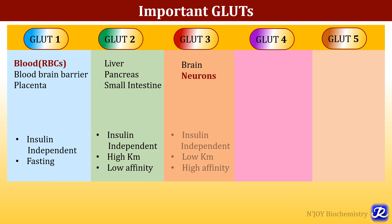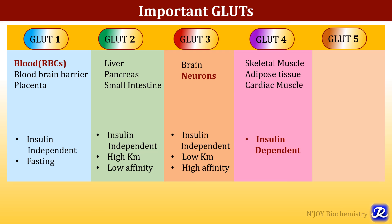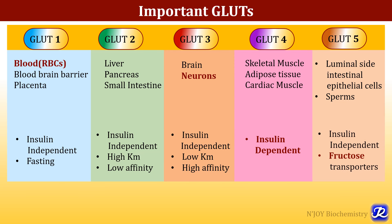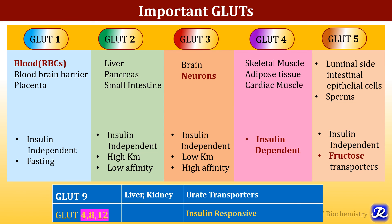GLUT 3 is in brain neurons, insulin independent, with low KM and high affinity — responsible for glucose uptake during fasting. GLUT 4 is in skeletal muscle, adipose tissue, and cardiac muscle — insulin dependent, requiring insulin for recruitment from the intracellular site to the cell surface for glucose uptake. GLUT 5 is on the luminal side of intestinal epithelial cells and sperm, insulin independent, and exclusively transports fructose. GLUT 9 is located in the liver and kidney and is responsible for urate transport. Apart from GLUT 4, GLUT 8 and GLUT 10 are also insulin responsive.